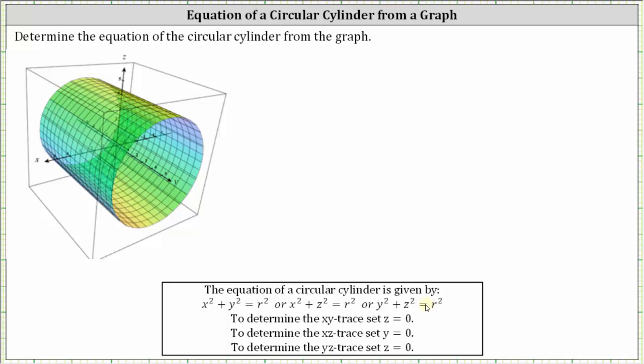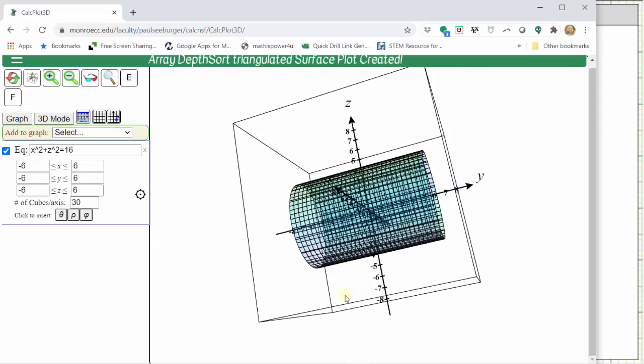So the key to determining the equation is to determine which of the three traces of the circular cylinder is a circle. Let's take a look at a dynamic graph of the circular cylinder. So here we have the graph of the circular cylinder.